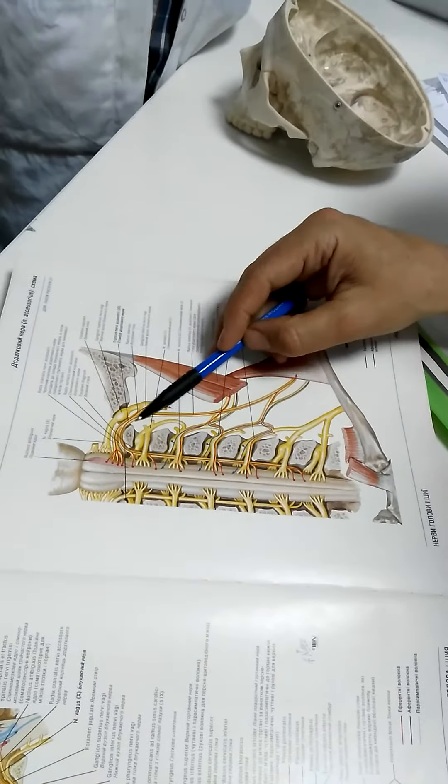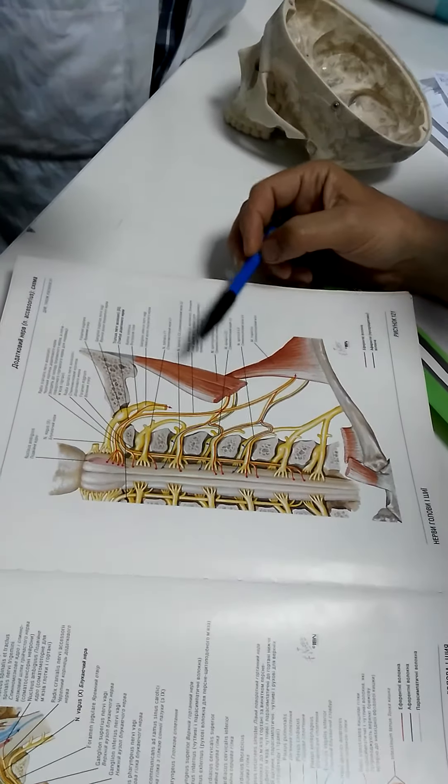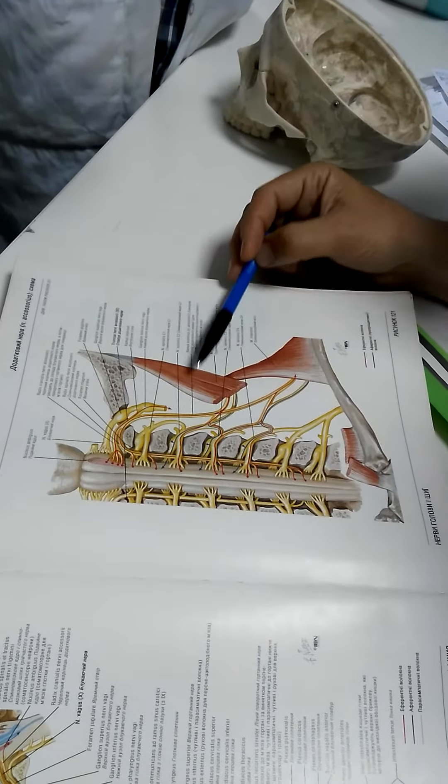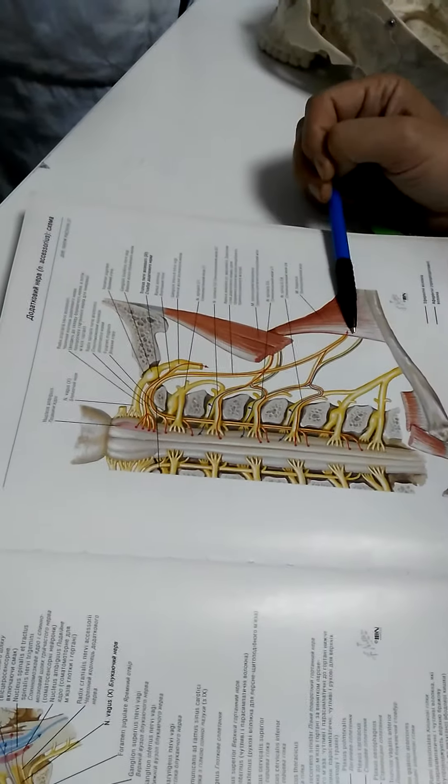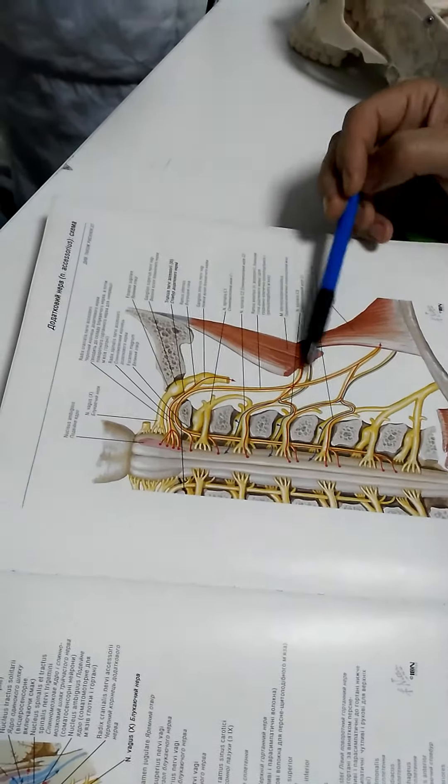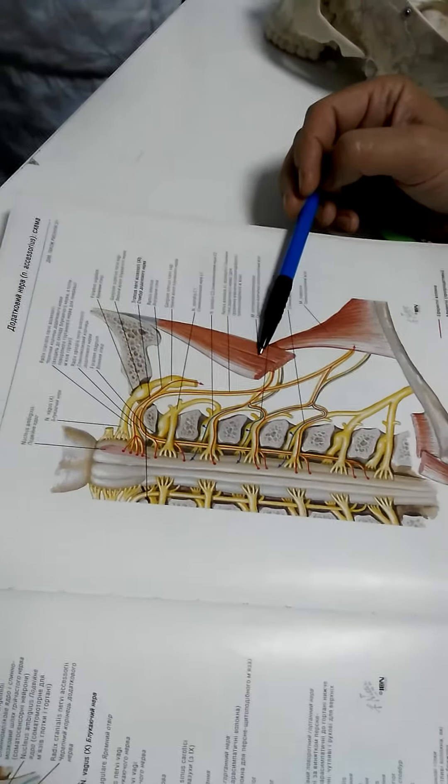Then nervus accessorius goes out and elevates to main muscles: musculus sternocleidomastoideus and musculus trapezius. These two muscles have the same development. That's why they receive the same innervation and surrounded with the same fascia.